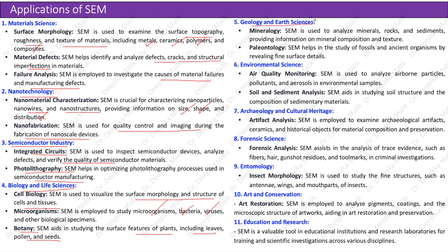In geology and earth sciences: SEM is used to analyze minerals, rocks, and sediments, providing information on mineral composition and texture. In paleontology, SEM helps study fossils and ancient organisms by revealing fine surface details. In environmental science, SEM is used to analyze airborne particles, pollutants, and aerosols, as well as soil structure and sedimentary materials. In archaeology and cultural heritage, SEM examines artifacts, ceramics, and historical objects for material composition. In forensic science, SEM assists in analysis of trace evidence such as fibers, hair, gunshot residues, and tool marks.